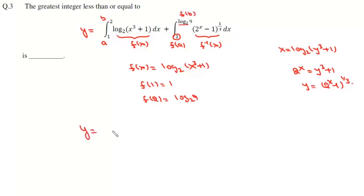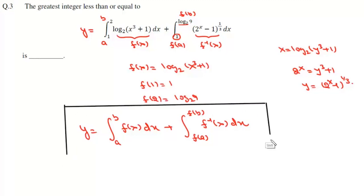So essentially this question is: the integral from a to b of f(x)dx plus the integral from f(a) to f(b) of f inverse of x dx, and we have to simplify this structure.